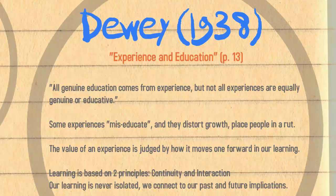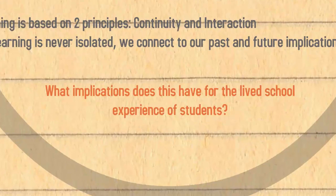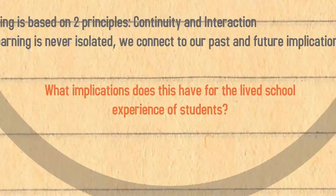Learning tends to be based on two principles according to Dewey: continuity and interaction. Our learning is never really isolated because we connect to our past and the future implications. So what implications does that have for the lived school experience of students? Their impressions of school can really color how well they learn from being in school.